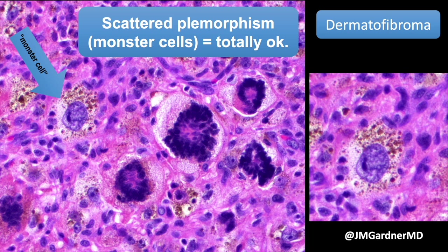And look at that — the monster cell. I love seeing monster cells and pointing them out to trainees, but I sign the case out as dermatofibroma with no mention of monster cells, because no patient wants to see a report saying they've got 'monster' anything inside their body. If someone sends me a consult case worried about the atypia, I'll tell them that scattered pleomorphism or so-called monster cells is a common finding in DF and is totally benign.